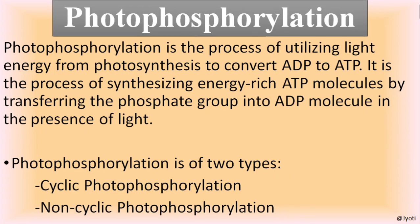Now we will discuss photophosphorylation. It is the process of utilizing light energy from photosynthesis to convert ADP to ATP by transferring a phosphate group to ADP in the presence of light. Because ATP synthesis (phosphorylation) occurs in the presence of light, it is called photophosphorylation. Photophosphorylation is of two types: cyclic photophosphorylation and non-cyclic photophosphorylation.